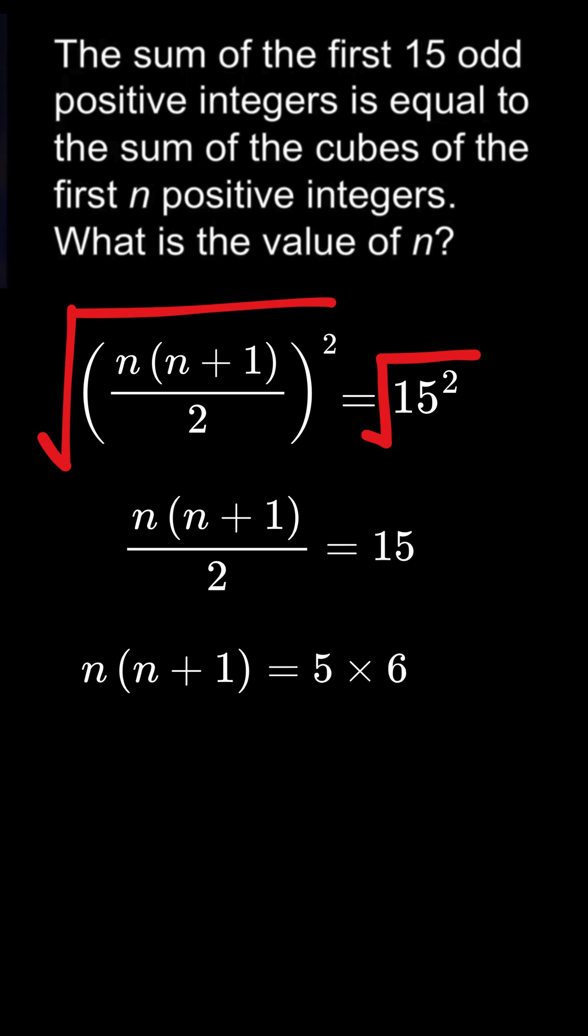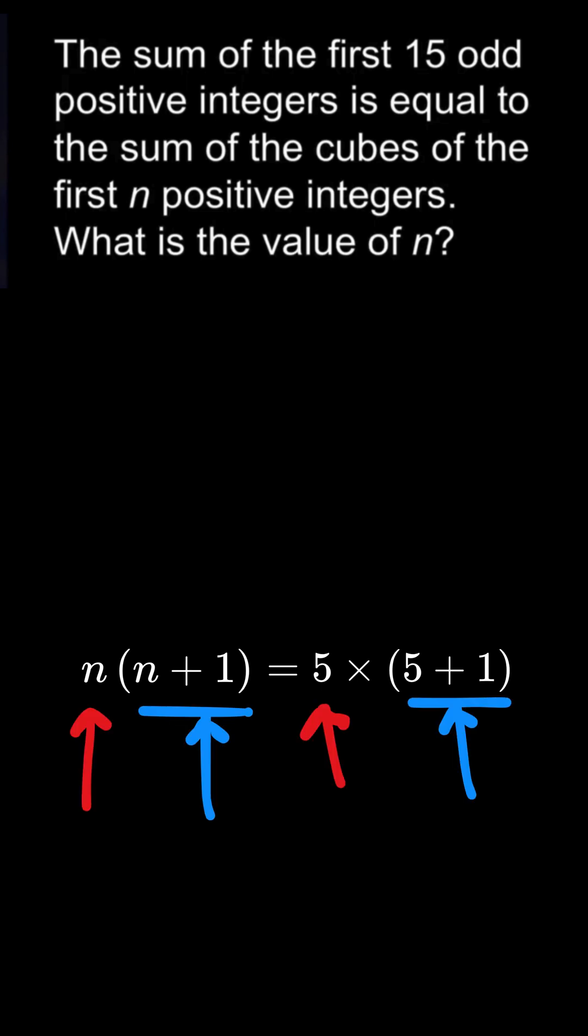We can write 30 as 5 times 6, or 5 times 5 plus 1. Check both of them, and this gives us n equals 5.